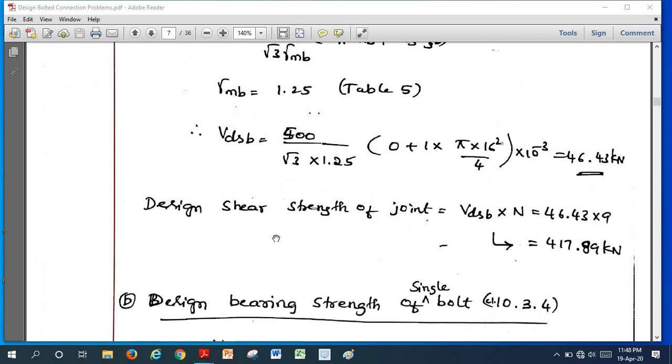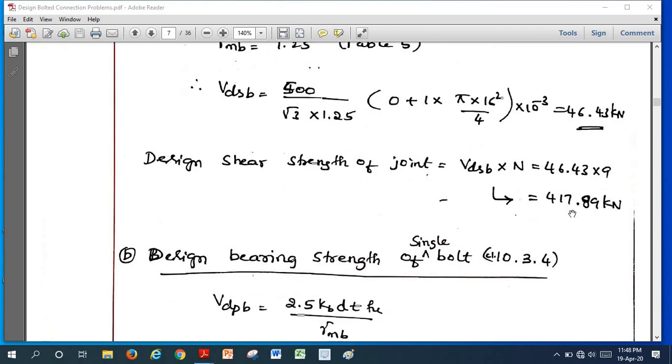If you want entire joint strength in shear, we should multiply number of bolts with the single bolt value in shear, that comes out to be 46.43 × 9, that will be 417.18 kN. This is the strength of the joint in shear due to bolts.